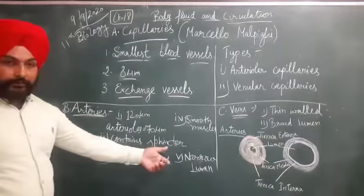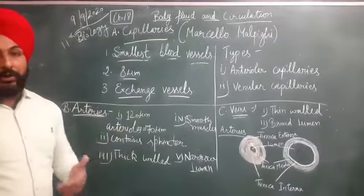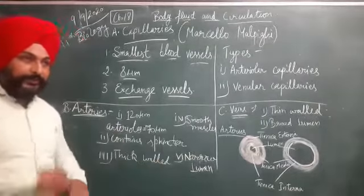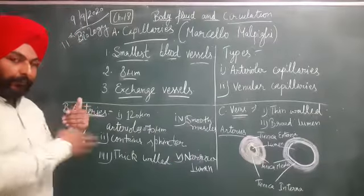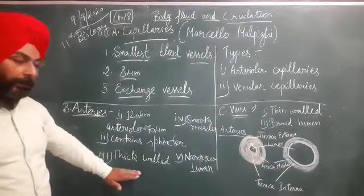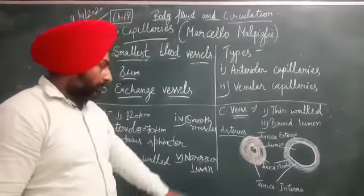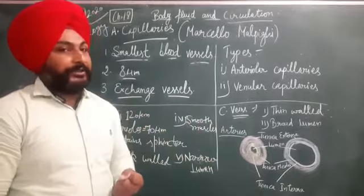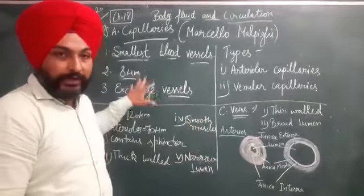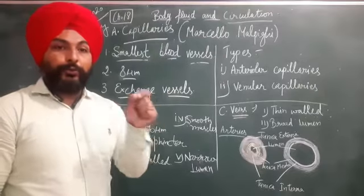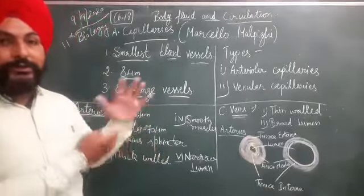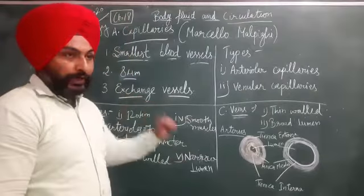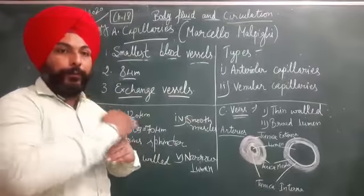Arteries contain centers that help to maintain the flow of blood. They also have smooth muscles which help to maintain contraction and relaxation. The contraction of these blood vessels is known as vasoconstriction, and the relaxation of these blood vessels is known as vasodilation. These arteries transport oxygenated blood from the heart to body parts, except for the pulmonary arteries.